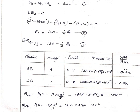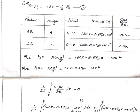Differentiating M with respect to RB: for span AB, ∂M/∂RB = −0.5x. For span BC, since RC = 160 − 0.5RB, ∂M/∂RB = −0.5x. We now substitute M and ∂M/∂RB into the strain energy equilibrium equation.